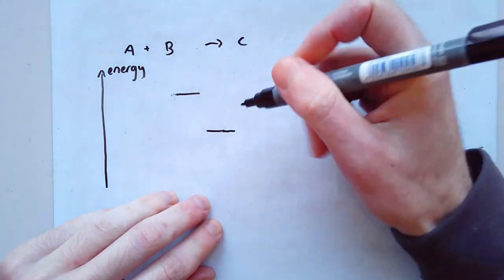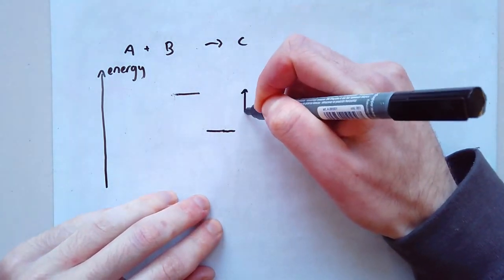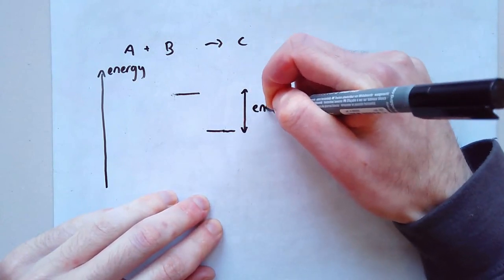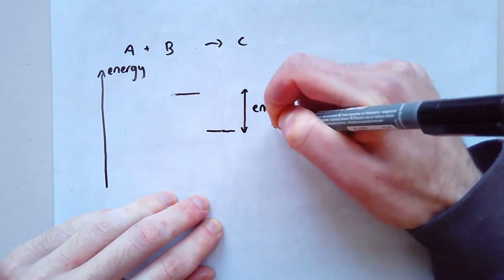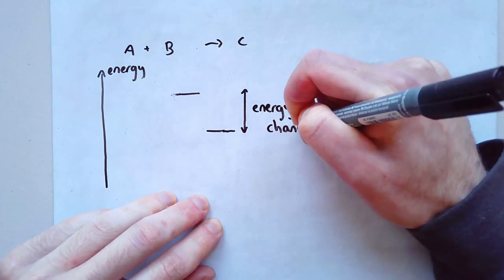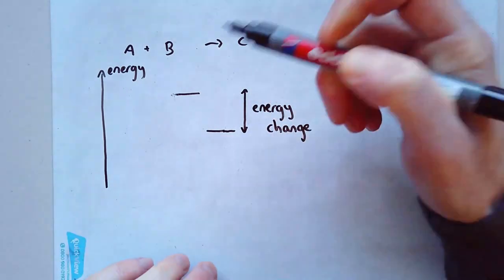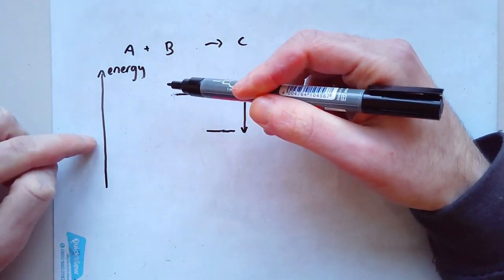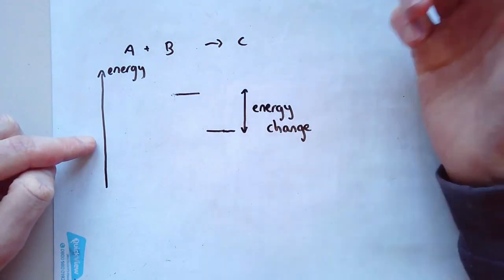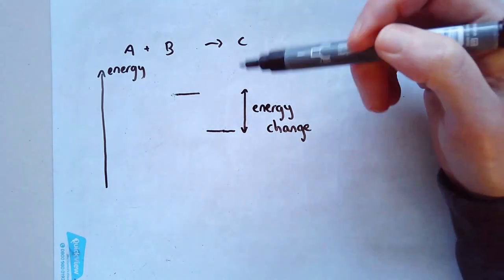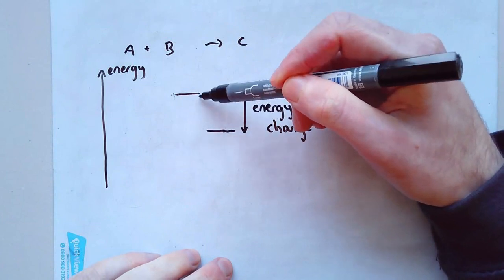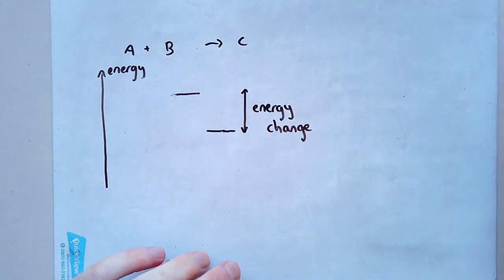Now obviously what we could do is we could say, right well that there is going to be the energy change in the reaction. So the difference in energy between here and here, this might be a thousand joules, this might be 800 joules, which means that difference would be 200 joules. It doesn't really matter. The point is, from reaction to reaction it will change. But the distance between them, that's going to be the size of the change.